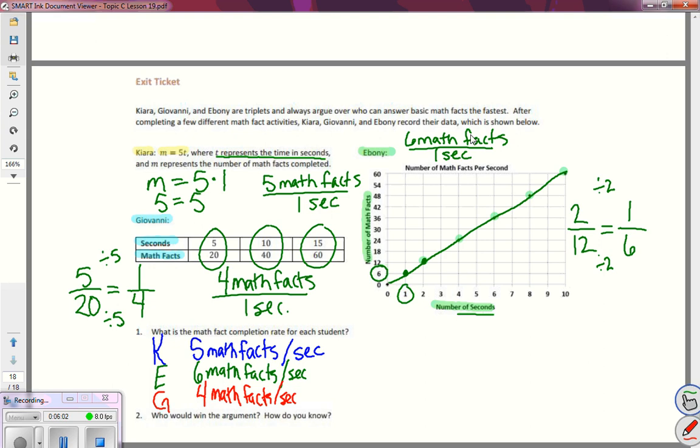And the facts show that Giovanni has four math facts per second, which is less than Chiara's five math facts per second, which is less than Ebony's. So Ebony can solve more math facts per second than the other two girls. So who would win the argument? Ebony is going to win.